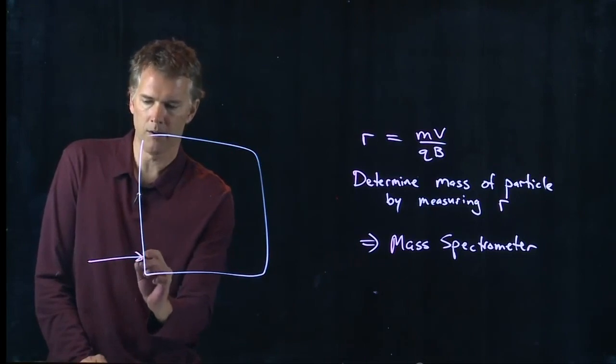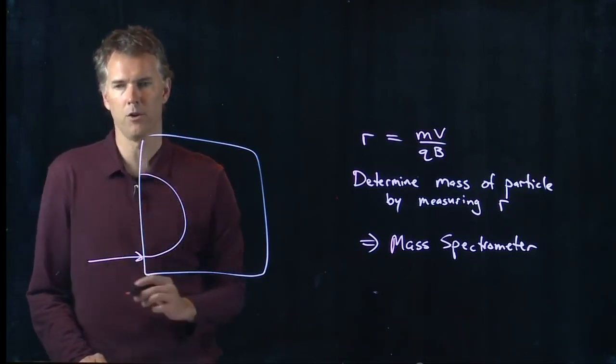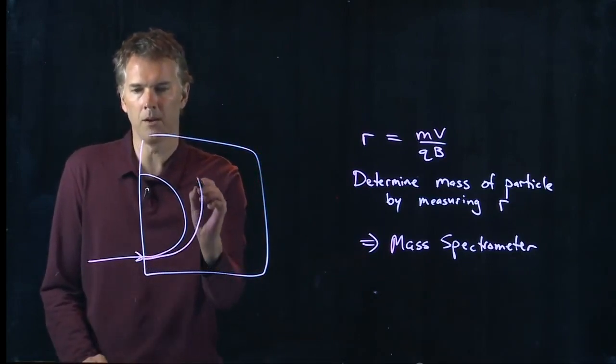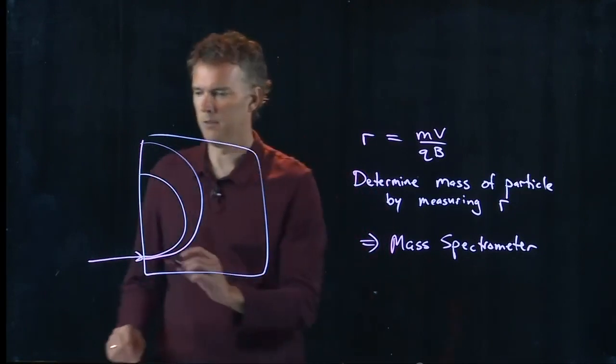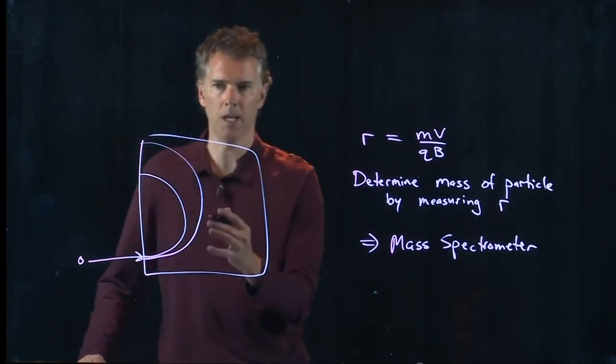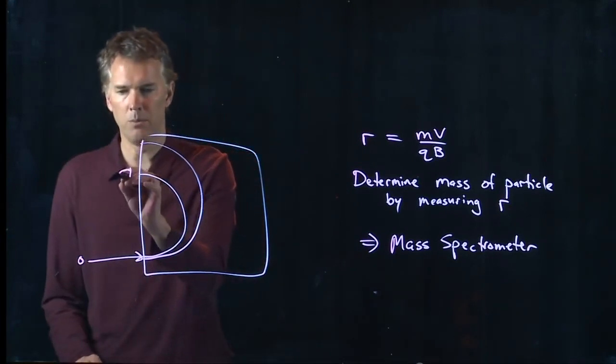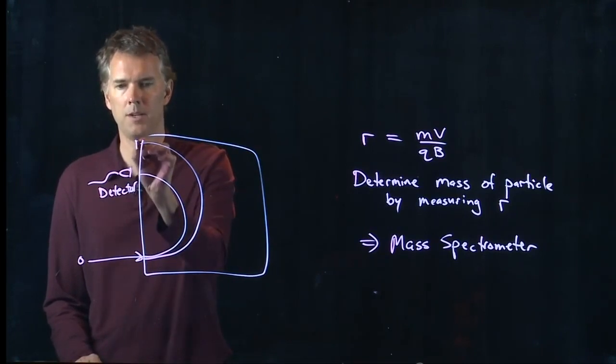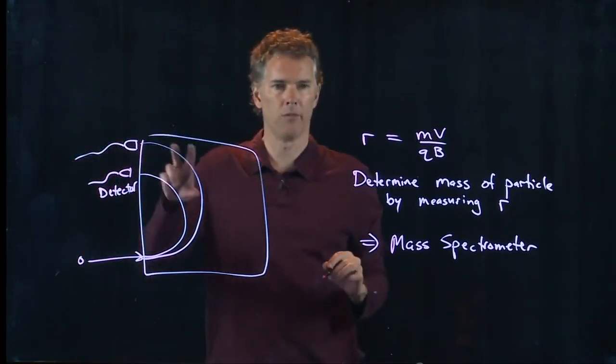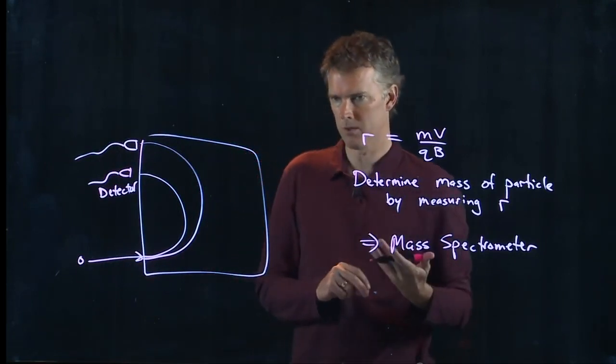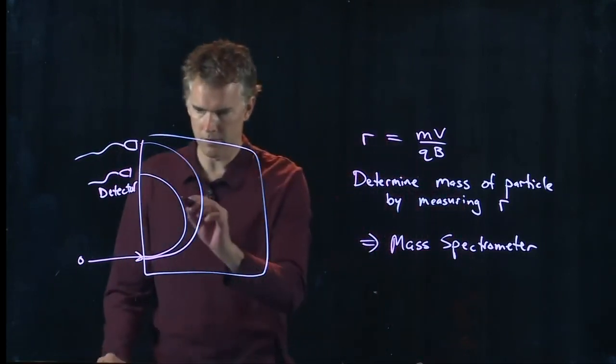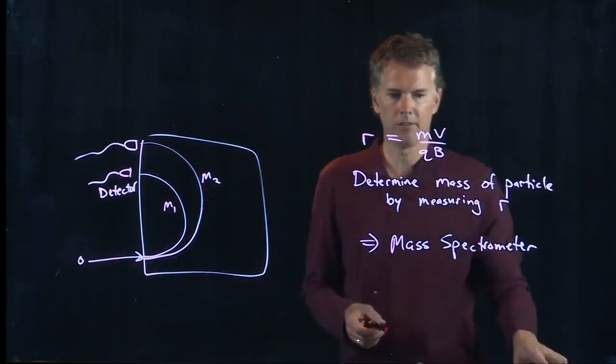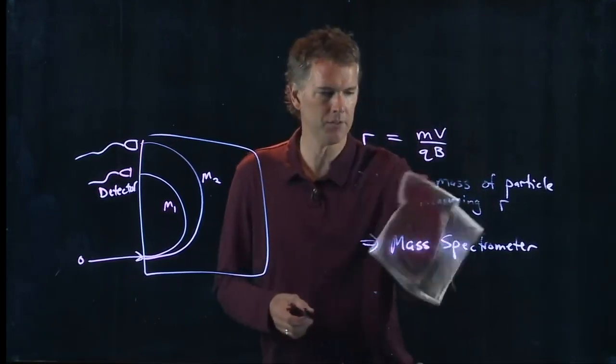One of those is going to come firing in and take a small radius of curvature. The other particle that comes in is going to take a much bigger radius of curvature, and so now you have objects that are coming in that take two different trajectories. You put a detector there and you put a detector there, and now whichever one fires you can determine which mass is which.